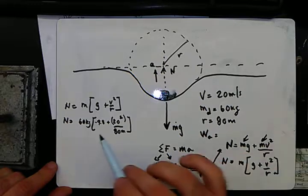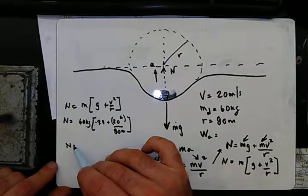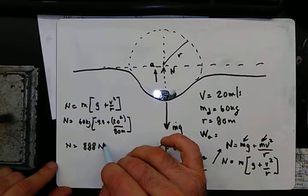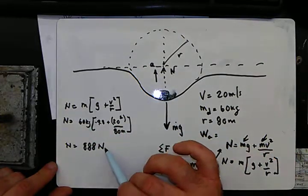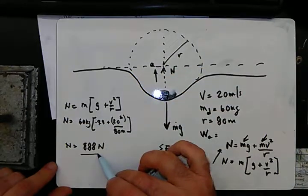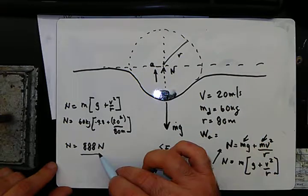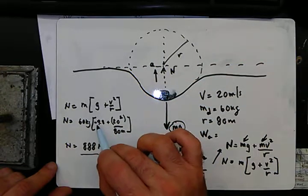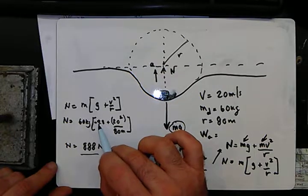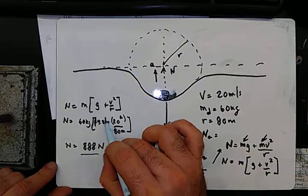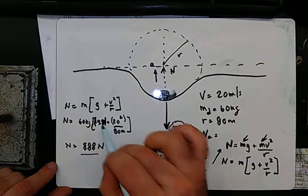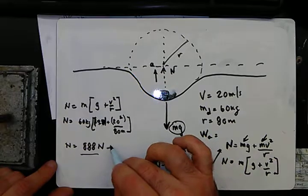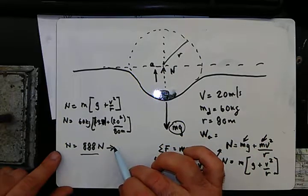Solving for the normal force gives approximately 888 newtons. We use the absolute value of gravity in this dynamic section. So the apparent weight is 888 newtons, which must equal the normal force.